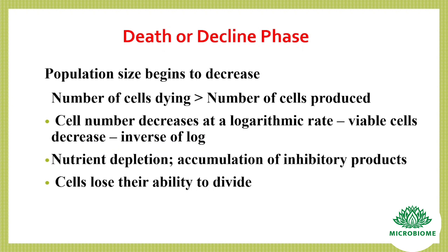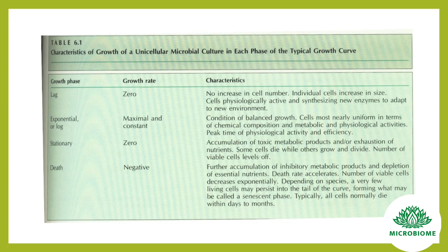Next, in the death or decline phase, the population size begins to decrease — the number of cells dying is greater than the number of cells produced. Cell numbers decrease at a logarithmic rate, and viable cells decrease inversely on a log scale. Nutrient depletion and accumulation of inhibitory products have occurred, and cells have lost their ability to divide.